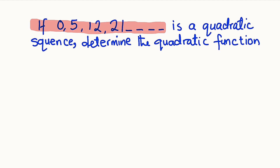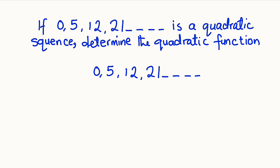The first thing we need to do is to confirm whether this sequence is indeed quadratic. To do that, we are going to take the first and the second difference of this sequence. If the second difference contains a constant common difference, then we say it is quadratic. Let's begin.